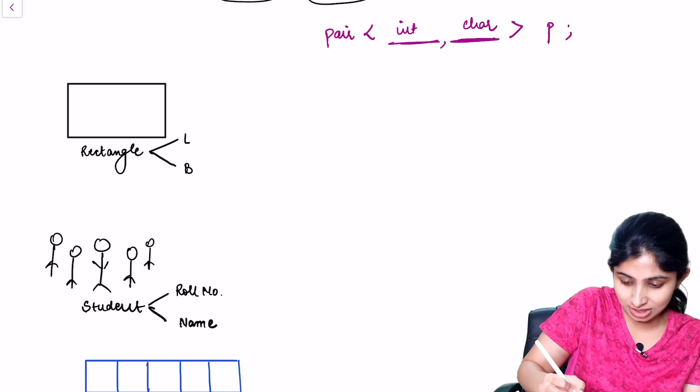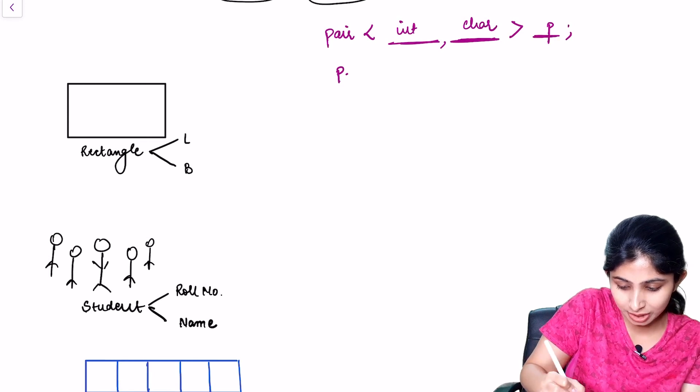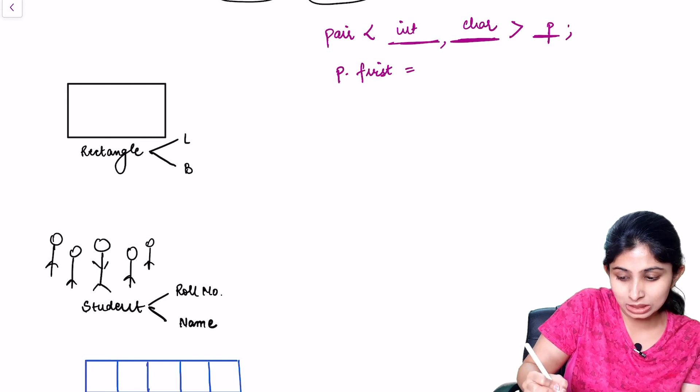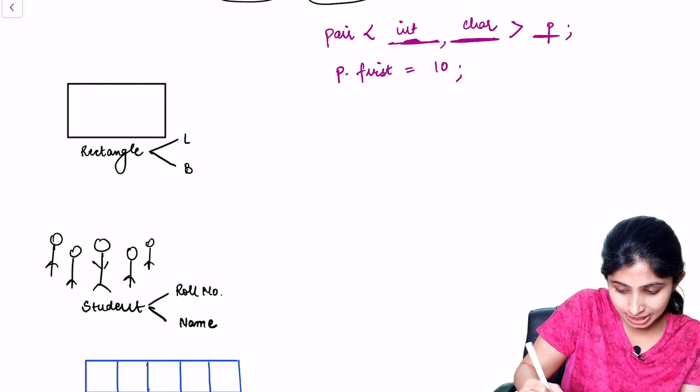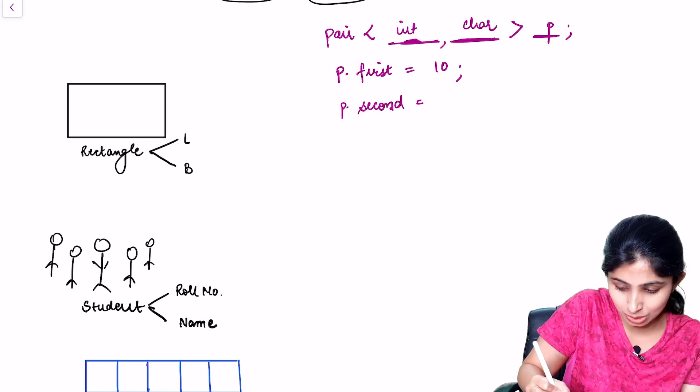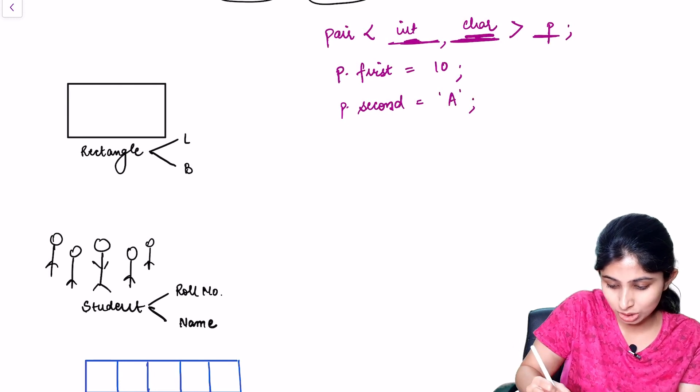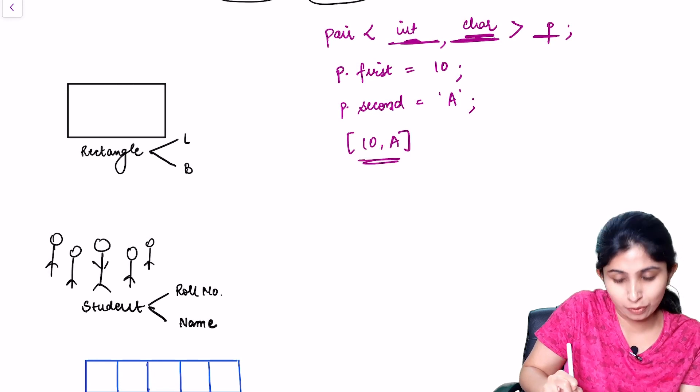Now let's initialize it. So we can say p.first equals 10 and p.second equals the second element say a. So this will create a pair 10, comma, a for us.